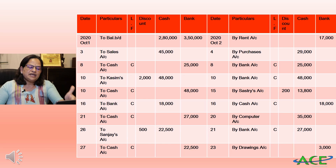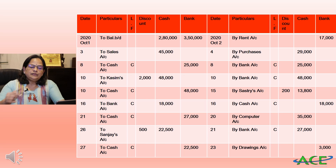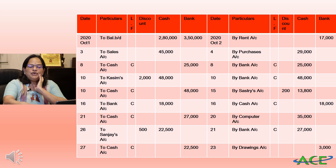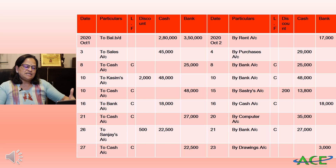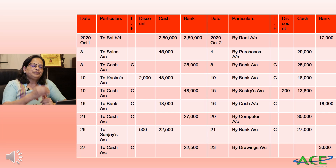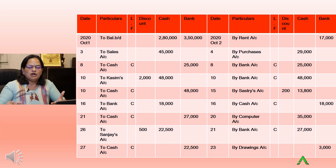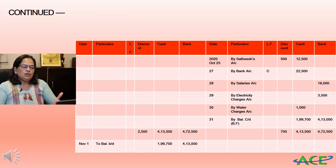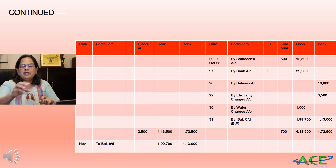October 21st — contra entry: 'To Cash Account' with bank value 27,000. On the receipt side 'By Bank Account' contra entry, cash column 27,000. October 20th: 'By Computer Account' 35,000. October 26th: 'To Sanjay's Account' — 23,000 was the amount, accepted 22,500, so 500 discount — 22,500 in cash column, 500 in discount column. October 27th — contra entry: 'To Cash Account' 22,500 in the bank column. October 23rd: 'By Drawings Account' 3,000 from bank.